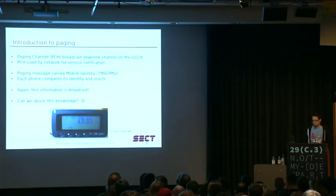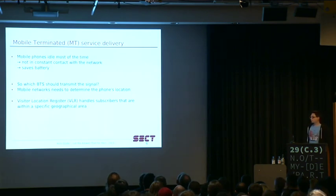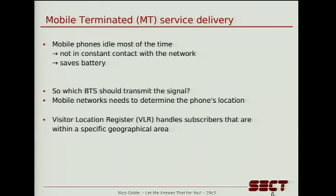When a mobile phone is monitoring the paging channel and it sees such a message, it grabs the mobile identity from the paging request and compares it to its own identity. If it matches, it has to react and establish a channel, and basically start all the procedures which allow the phone to accept the service. This is a broadcast channel on the downlink, so it's interesting — can we actually abuse the knowledge of what subscribers are being paged? In GSM networks, there is no end-to-end connection from one phone to another. The network differentiates between mobile originating services and mobile terminated services, which is when the network tries to deliver a phone call or SMS — that's what this talk is about.